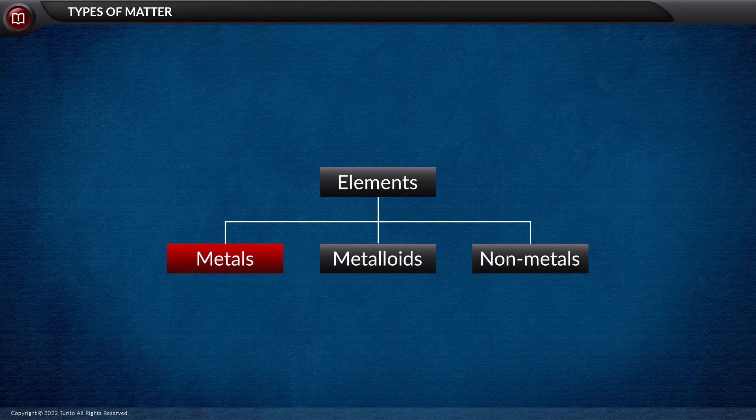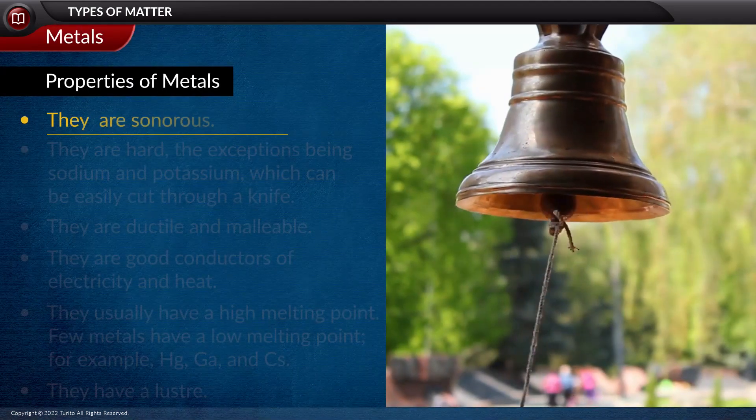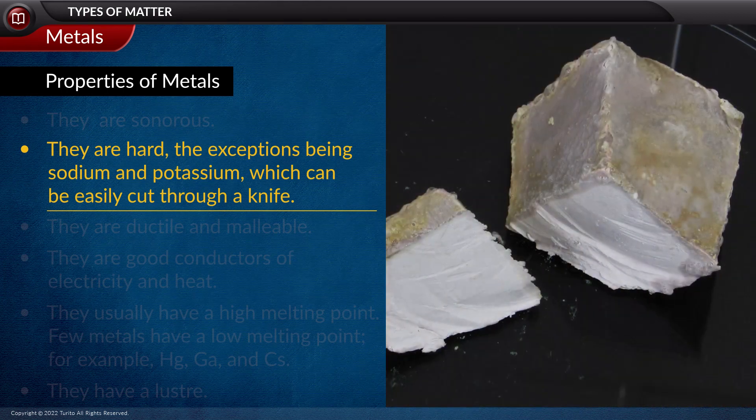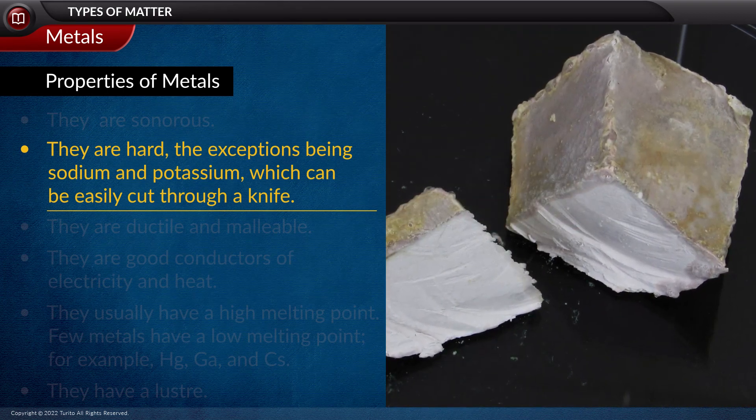Let us first study metals. If we see their properties, then we can say that they are sonorous. They are hard, the exceptions being sodium and potassium, which can be easily cut through a knife.